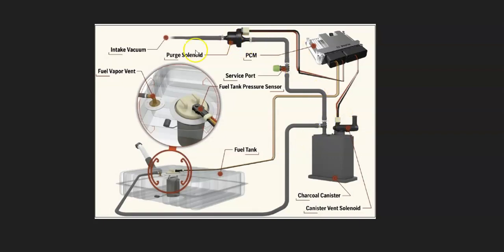Then the hose goes up to what's called a purge valve solenoid and this basically opens when the engine's running so the gas vapors go in and get burnt off, and then it closes when the engine's not running so they don't escape.